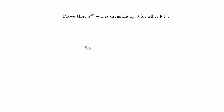Hey guys, in this video I'm going to do an induction proof. This one says: prove that 5 to the 2n minus 1 is divisible by 8 for all n in the natural numbers. We're going to prove this using the principle of mathematical induction — that's the first line I'm going to write in my proof.